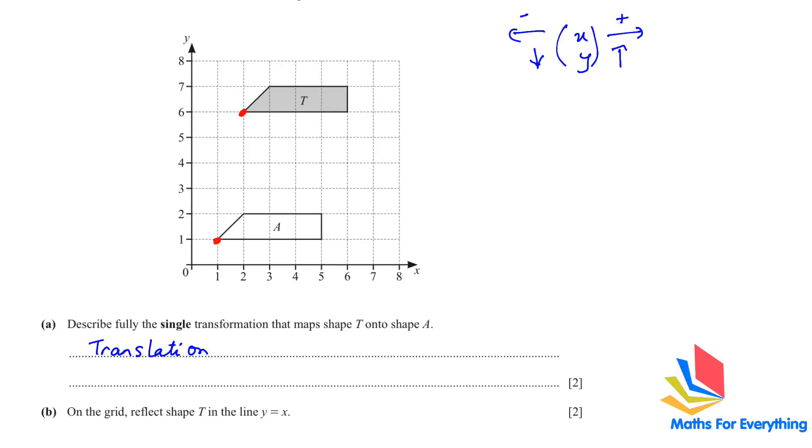It went 1 to the left. So, the translation for X is negative 1. And it shifted down by 1, 2, 3, 4, 5. Because it went down, the Y translation is negative 5.